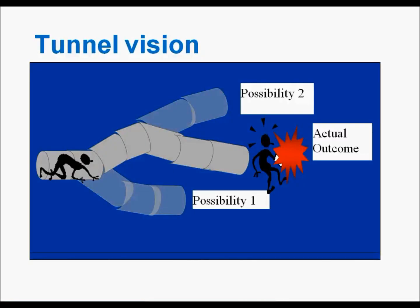Tunnel vision is the next theory that relates to human factors. In tunnel vision, there are two ways to look at the path leading to an unintended outcome: from inside and outside the tunnel. When we are going through our day, we are inside the tunnel, choosing our path based on the information we have at each juncture along the way. From outside the tunnel, it is easy to look at the outcome and say, 'Why did this happen? It should have been so obvious.' However, this is not generally true — when you are in the tunnel, you do not have the benefit of seeing the end result of the path you have chosen.